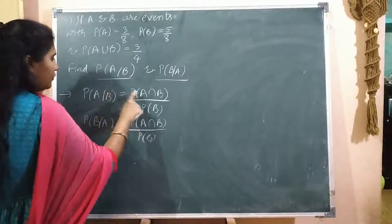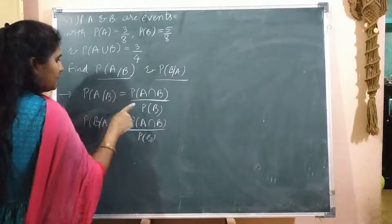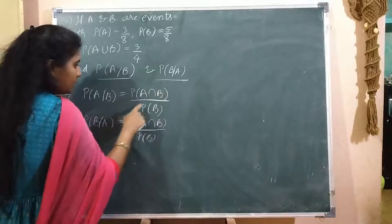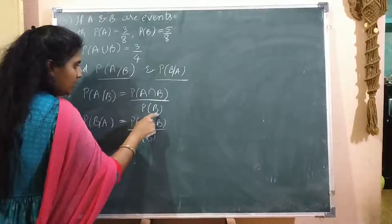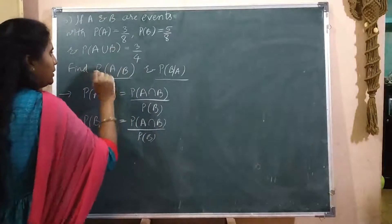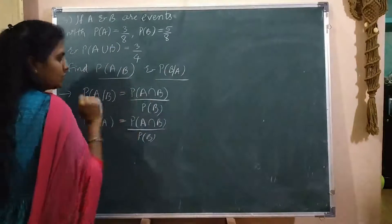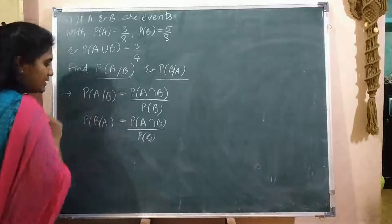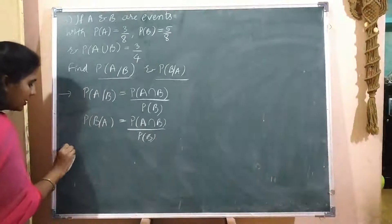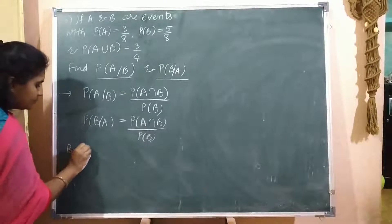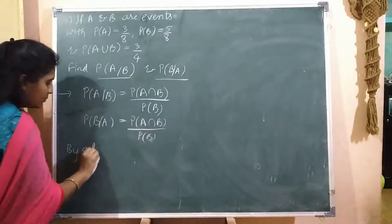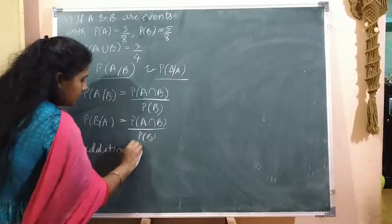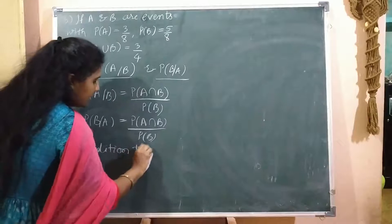To find these conditional probabilities, for the first one we need P of A intersection B divided by P of B. Here P of B is given, but P of A intersection B is not given. So first we need to find P of A intersection B, and we can do that by the addition theorem.